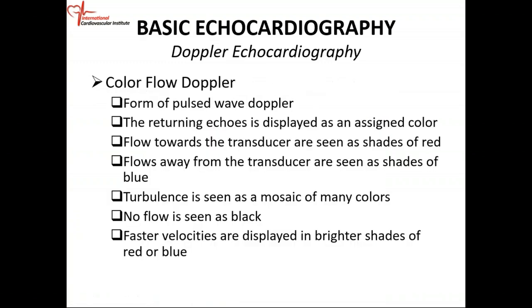Color flow Doppler is the third type of Doppler, and it is a type of pulse wave Doppler. The returning echoes are displayed and assigned colors. Flow towards the transducer is color-coded red; anything moving away from the transducer is color-coded blue or different shades of blue. Flow towards the transducer is seen as shades of red; flow away from the transducer is seen as shades of blue. If you have turbulence, you get a mosaic — a mixture of many colors. If there is no flow, it's depicted as black. Faster velocities are displayed as a brighter shade of red or blue.